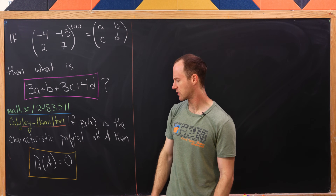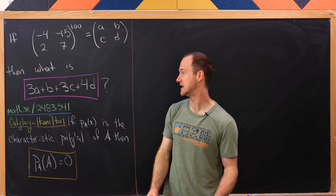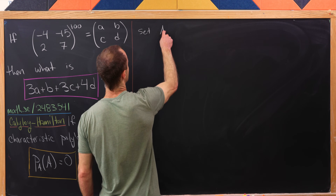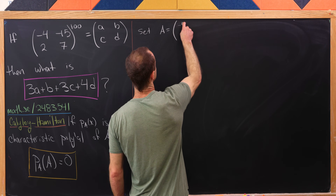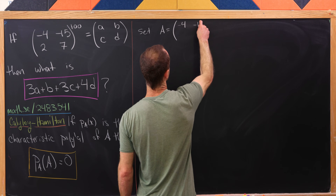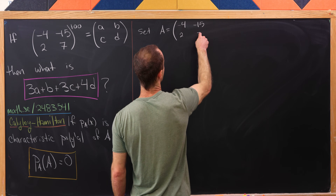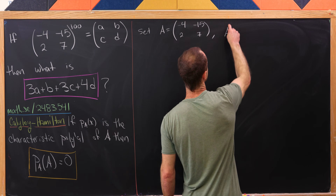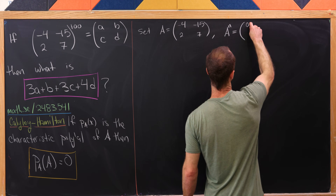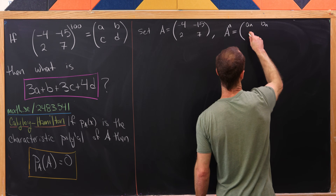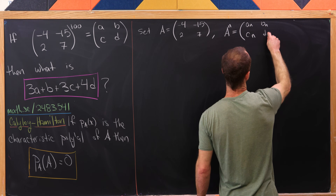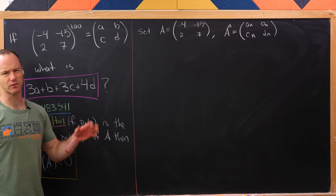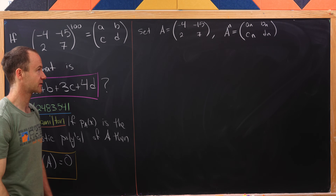You could calculate that out for a couple of cases. Let's set A equal to that matrix: negative 4, negative 15, 2, and 7. Let's introduce some notation — let's say A to the n power is equal to the matrix [A_n, B_n, C_n, D_n]. So our original A, B, C, D are really A_100, B_100, and so on.